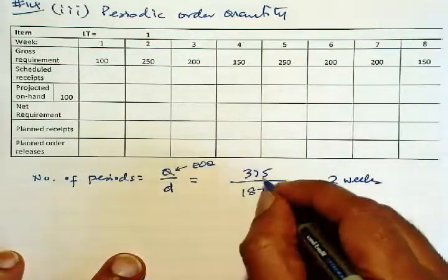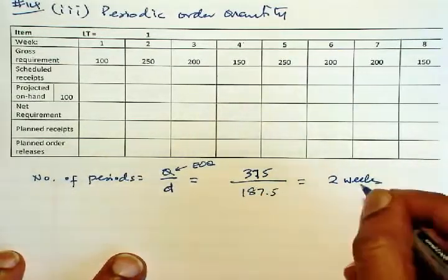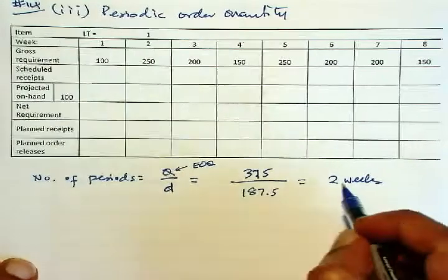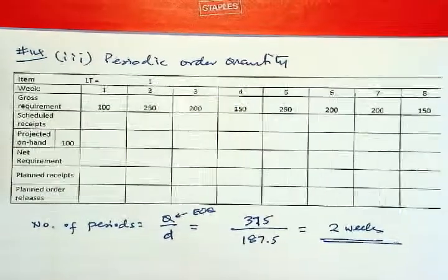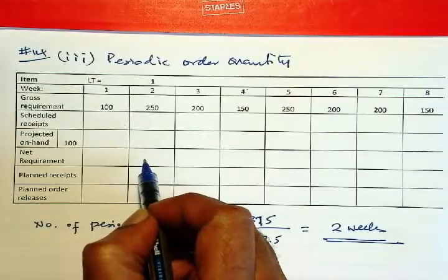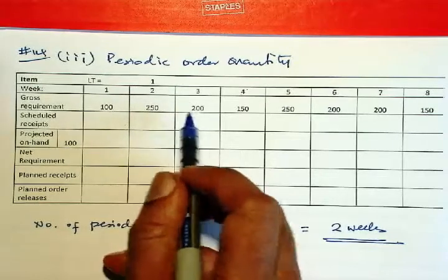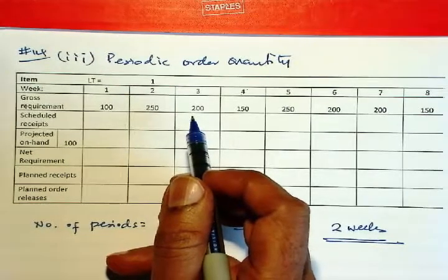Actually, probably it's going to be exactly two weeks. So what we're going to do is, whenever there is a requirement, then we will combine two weeks' worth of quantity. So we start with 100.